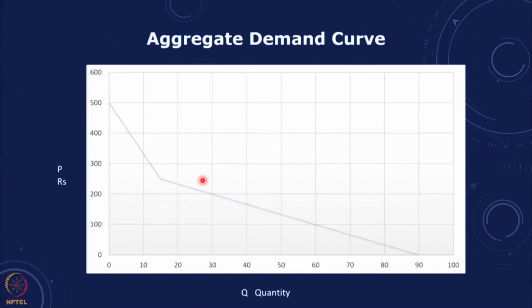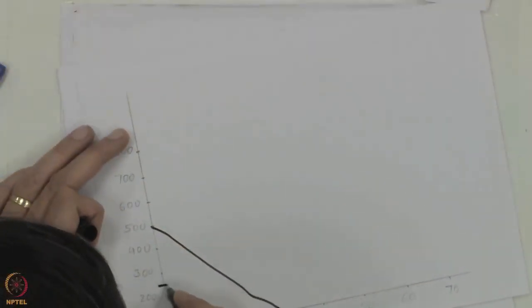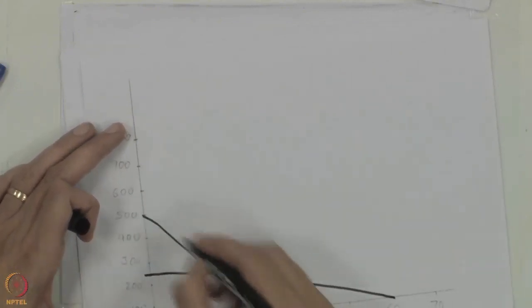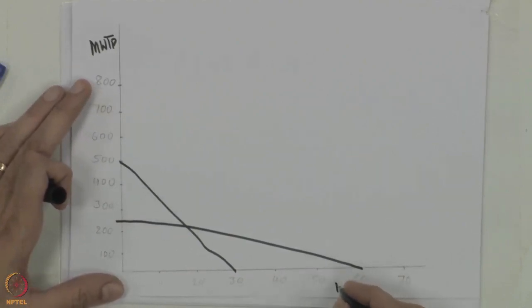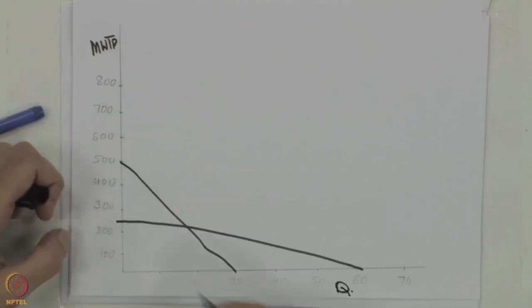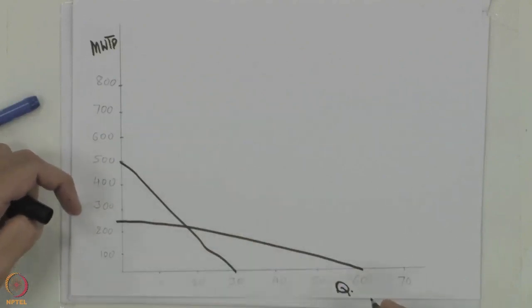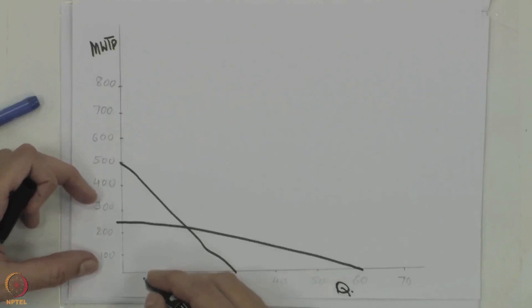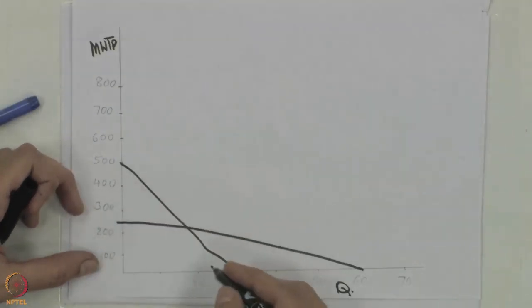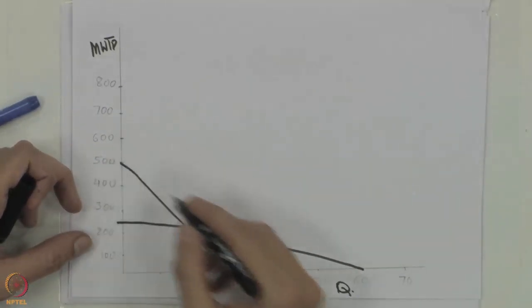Let us now look at what we can do for public goods. In the case of a public good, what would happen is different. We redraw the axes: the marginal willingness to pay on the y-axis and the quantity on the x-axis. In society, when we are talking of a non-rival good, all consumers will consume the same amount of the good.